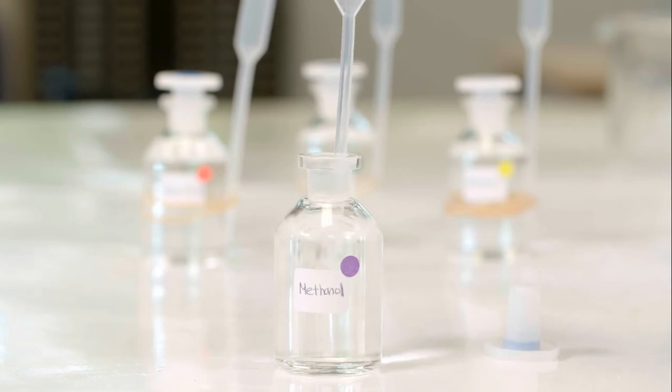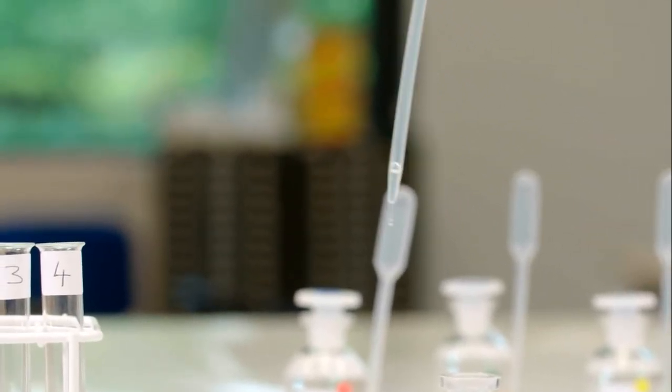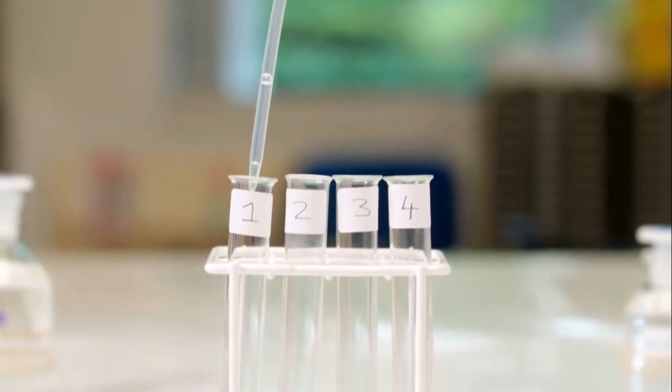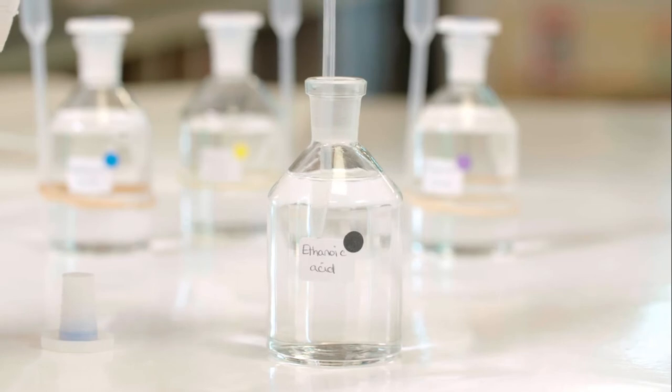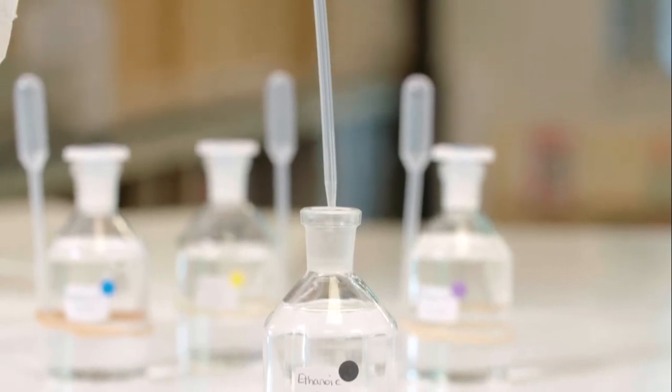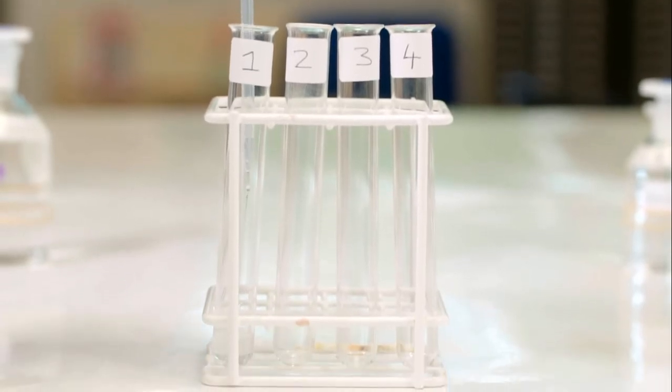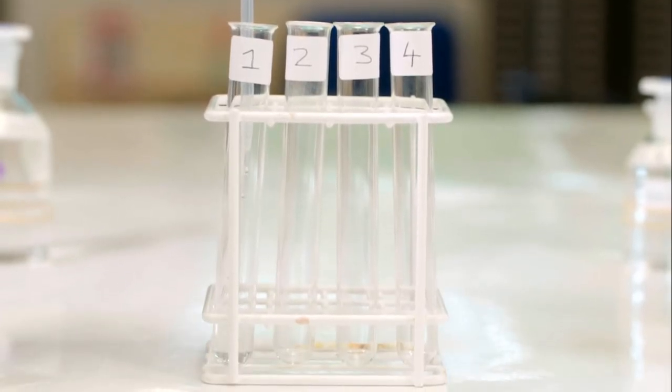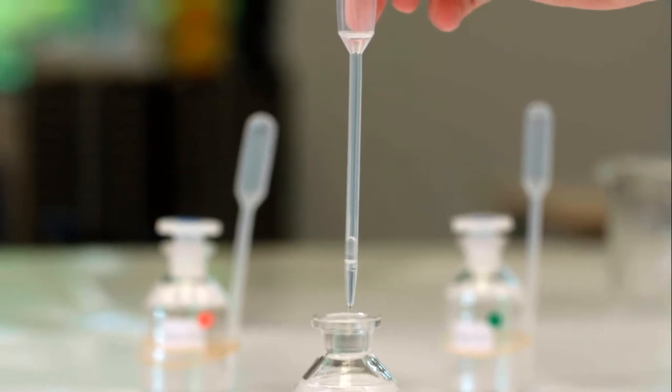One centimeter cubed of methanol is added to test tube 1 using the pipette attached to its bottle. Then one centimeter cubed of ethanoic acid is added to test tube one using the pipette attached to its bottle. The pipettes should not be cross contaminated. The procedure is repeated for the other combinations in the results table.